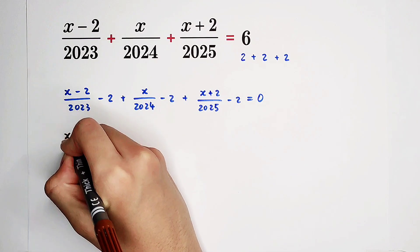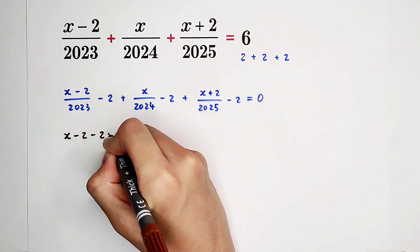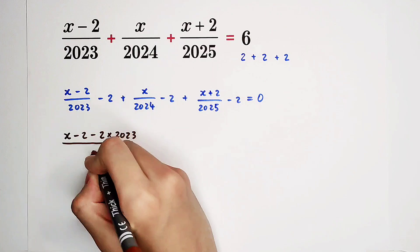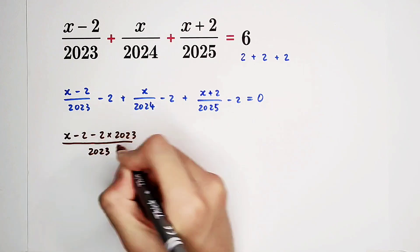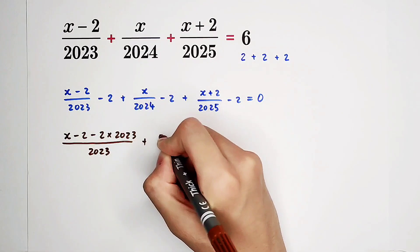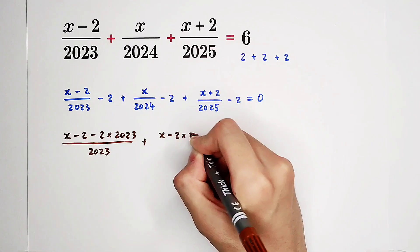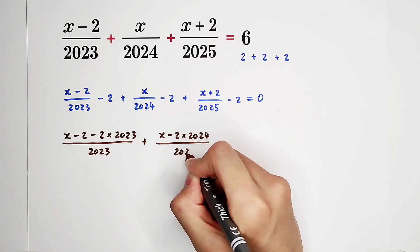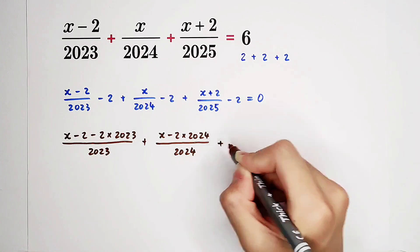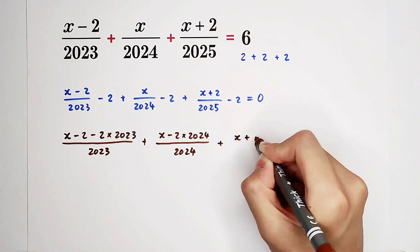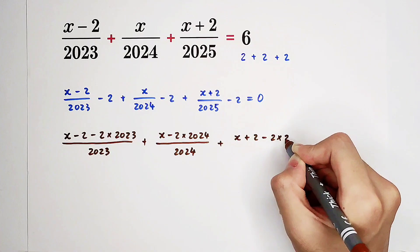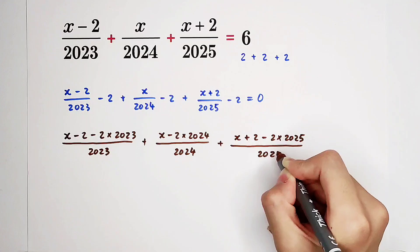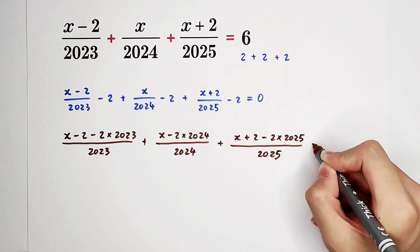Here is X minus two minus two times 2023 over 2023. Here we have X minus two times 2024 over 2024. Here we have X plus two minus two times 2025 over 2025 equals zero.